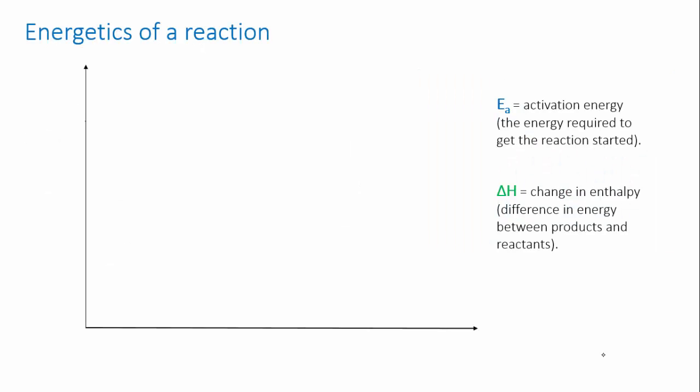We need a little revision on the energy changes that occur during a reaction, so we're going to draw an energy diagram. The vertical axis here is energy. The horizontal axis represents the progress of the reaction, or time if you like.